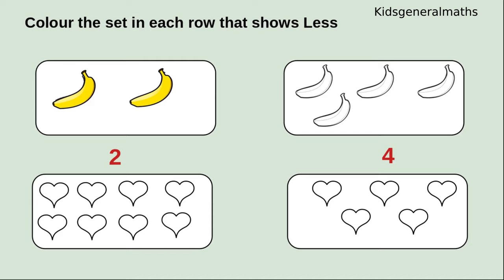Next we are going to color the heart shape which is less. 1, 2, 3, 4, 5, 6, 7, 8. So this box has 8 hearts. 1, 2, 3, 4, 5. This box has 5 hearts. So we are going to color which is less — 8 or 5. While comparing these two numbers, which is less? 5 is less. So we are going to color it.